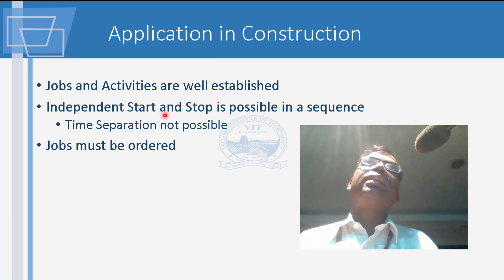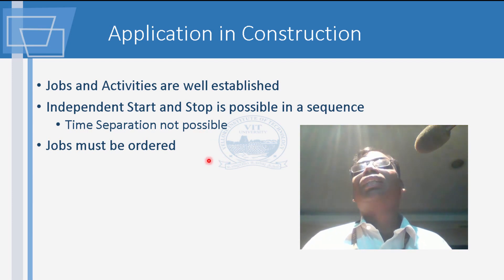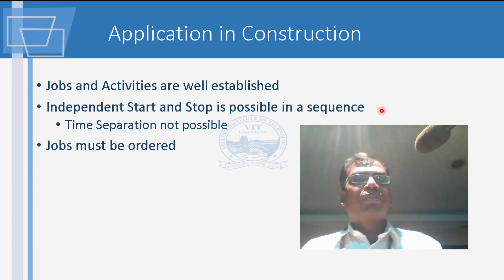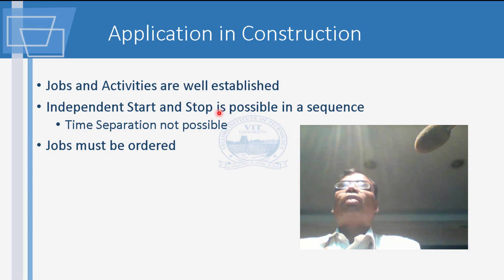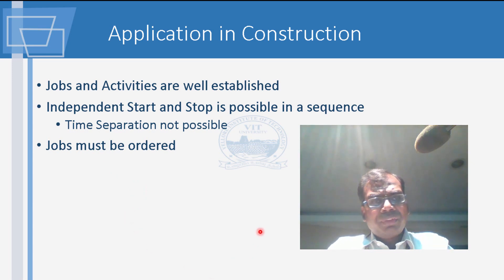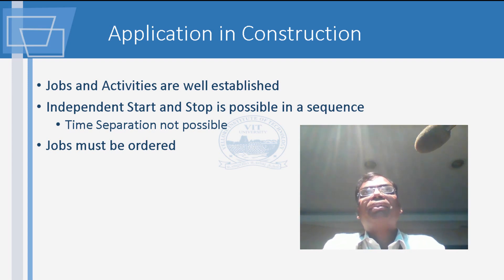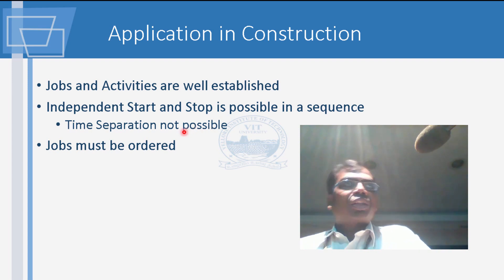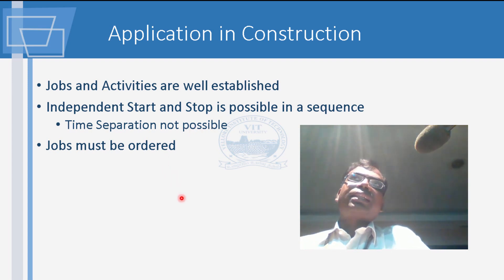CPM and PERT were not originally developed only for construction — they were done for maintenance work to be profitable. If you use CPM, PERT, or any planning technique, the first benefit is identifying all jobs and activities at the outset. You can also sequence activities — in our field, once an activity starts it typically continues sequentially until completion.